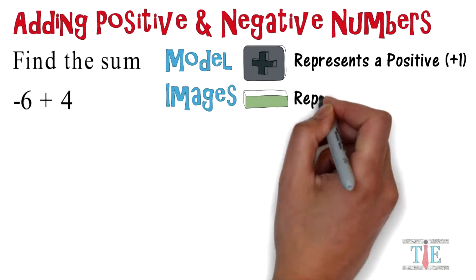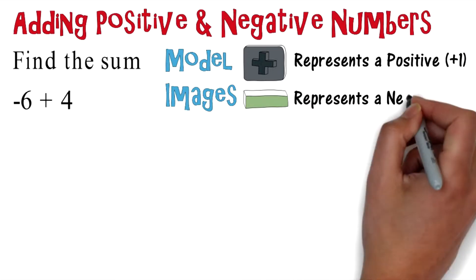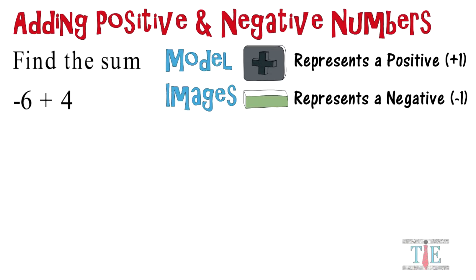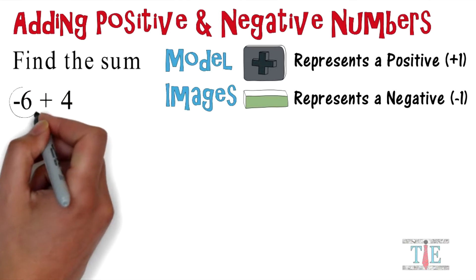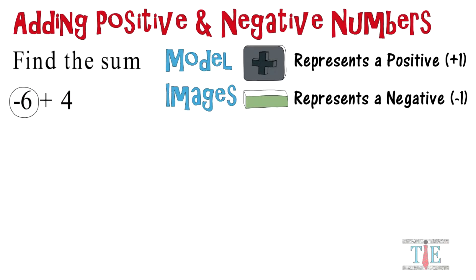This image represents a negative one. Let's take a look. First, we identify a negative six, so let's draw six negative signs: one, two, three, four, five, and six.